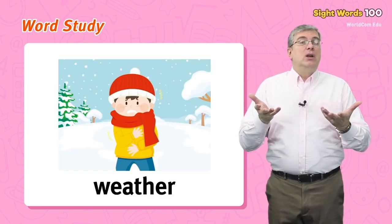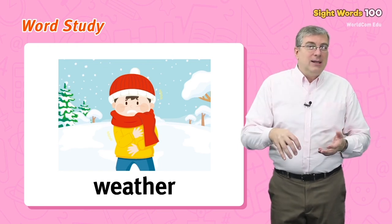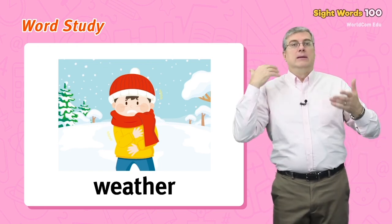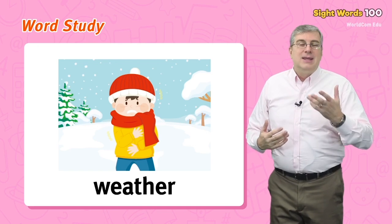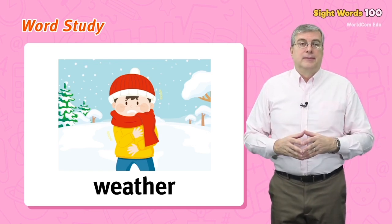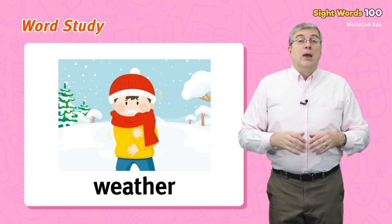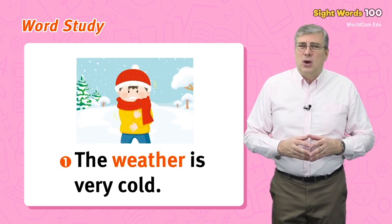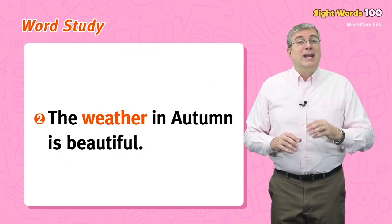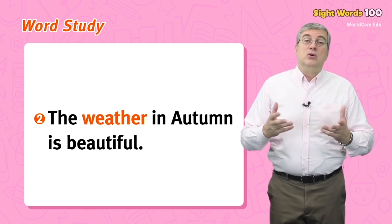Next we have weather. This word is used when we talk about rain, sunshine, or wind — these are different kinds of weather. For example, the weather is very cold, or the weather in autumn is beautiful.